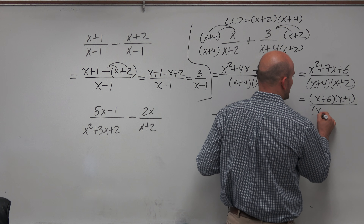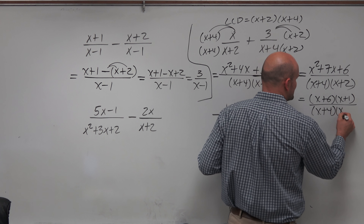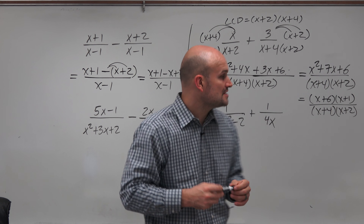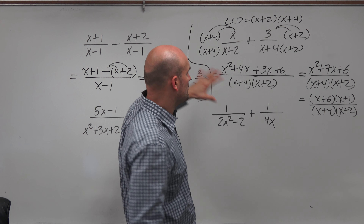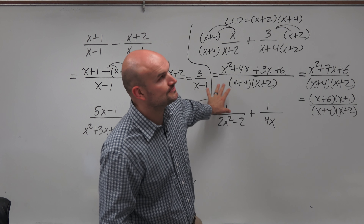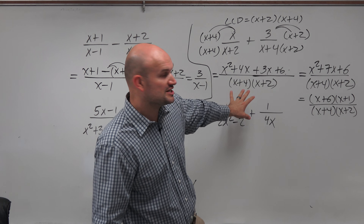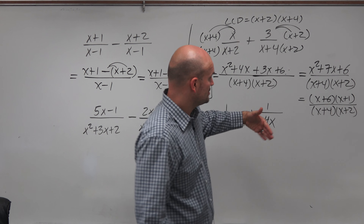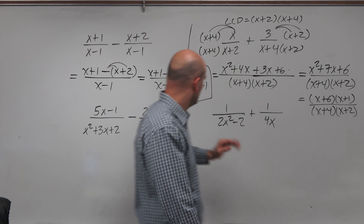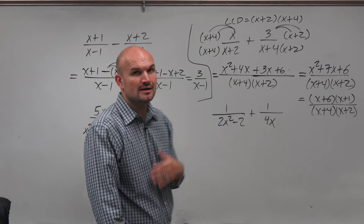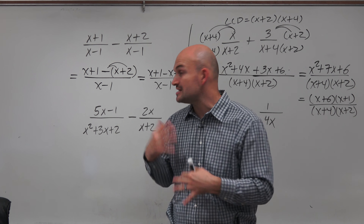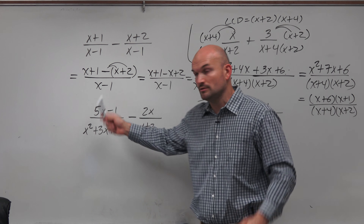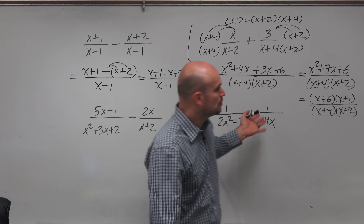The final form depends on how your teacher wants the answer written. You could also identify excluded values — the values that make the denominator equal zero — which here would be negative 4 and negative 2. For this video, I'm focusing just on the step-by-step operations of adding and subtracting rational expressions.